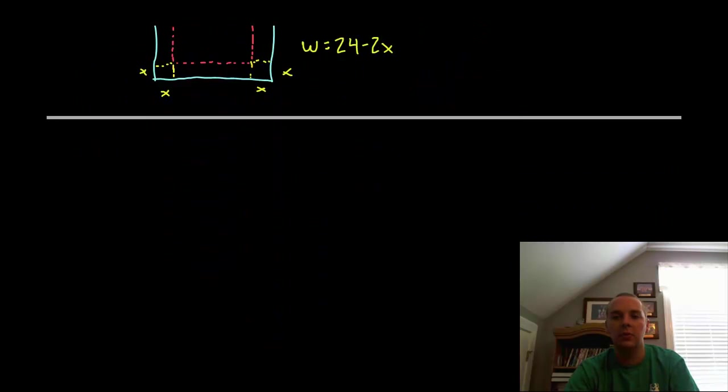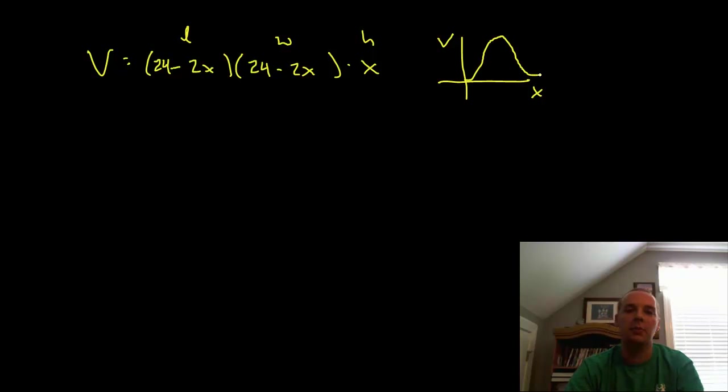That's great news. That means we can write the volume as a function of not length and width and height, but 24 minus 2x, that's the length, 24 minus 2x, that's the width, and x, that's the height. So we have that scenario that we wanted where the volume is just in terms of one independent variable. This is still the main philosophy of these optimization problems.